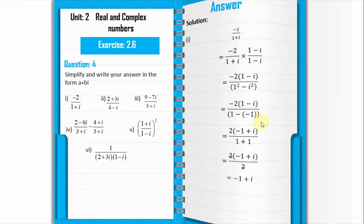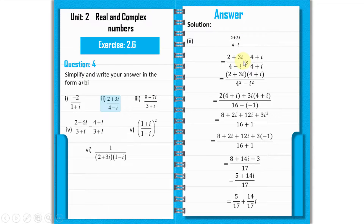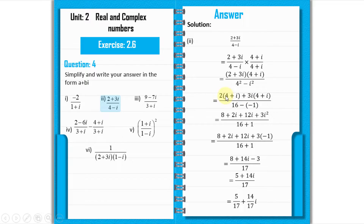Now we solve part 2 in the same way. The denominator is (4 minus iota), so we multiply and divide by (4 plus iota). We multiply 2 by (4 plus iota), then 3i by (4 plus iota). The denominator becomes 4 squared minus iota squared, which equals 16 plus 1 = 17.